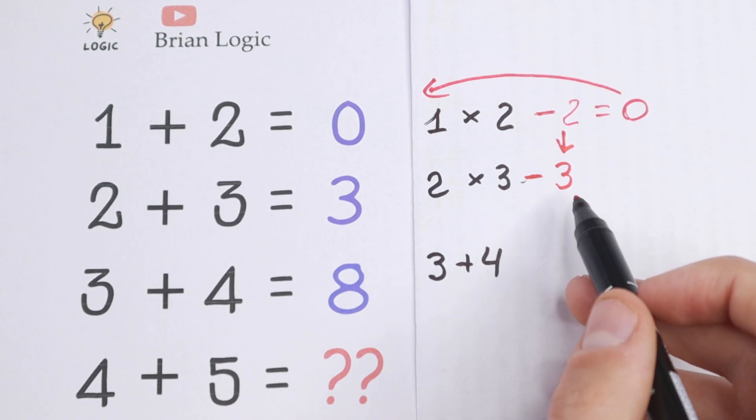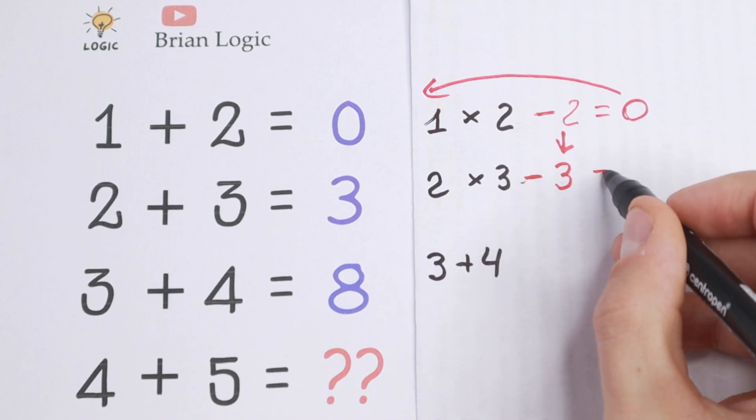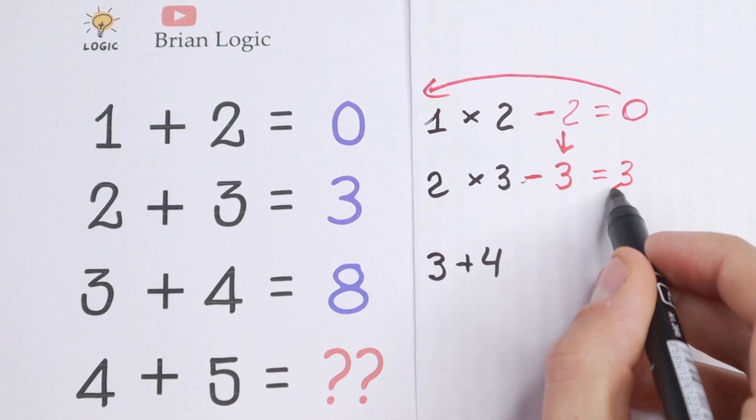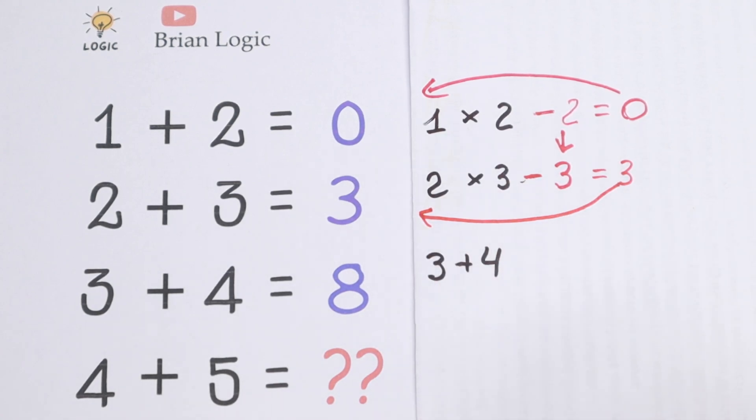If we subtract 3, we will have 2 times 3, 6, 6 minus 3, we will have 3. And right now we can see that we will have, from these two rows, we will have a really good pattern.